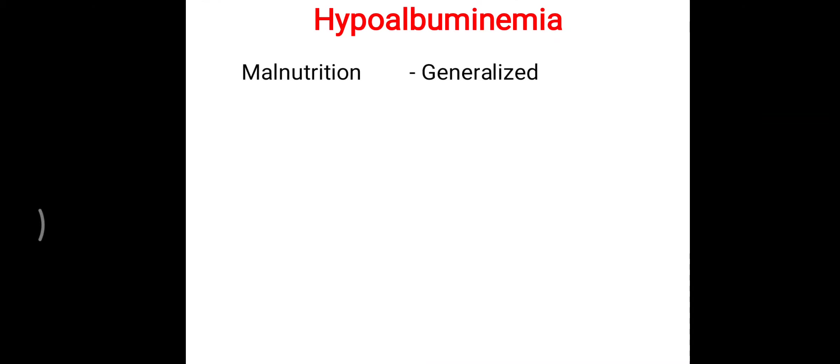So in which conditions is hypoalbuminemia occurring? First of all, that is malnutrition. If sufficient amino acids are not provided in the diet, then our liver is not able to produce the albumin which is needed inside our body. So in malnutrition, protein is not available, which means amino acids are not available, and that is reflected in the form of generalized edema, particularly seen in small children, and that is also called kwashiorkor.